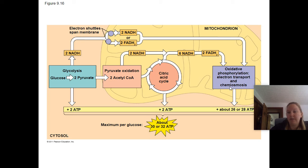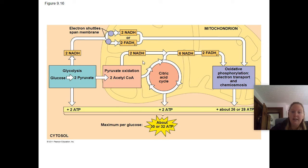Pyruvate goes into pyruvate oxidation to make two molecules of acetyl-CoA, generating two more NADH that move on to oxidative phosphorylation. The citric acid cycle makes six NADH and two FADH2 that also feed into oxidative phosphorylation.